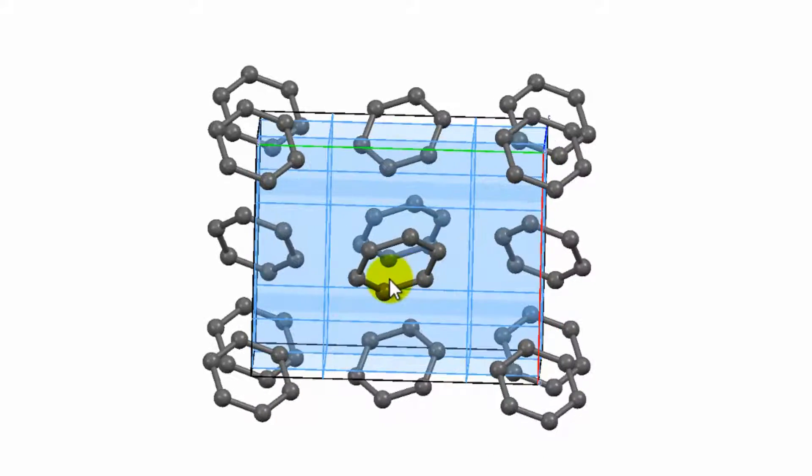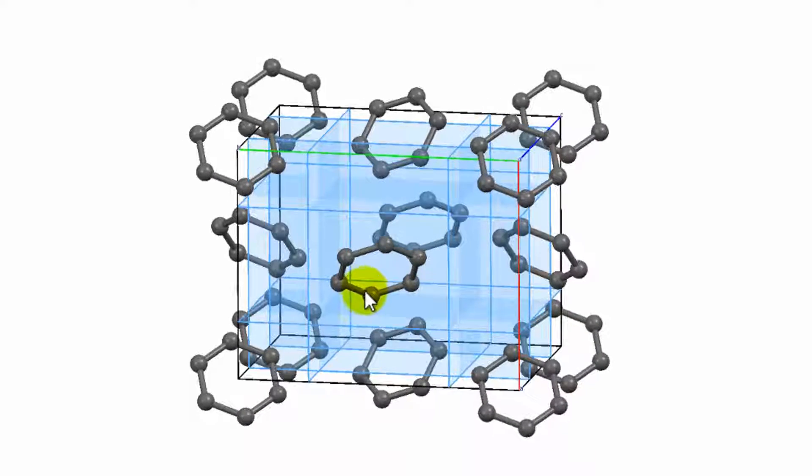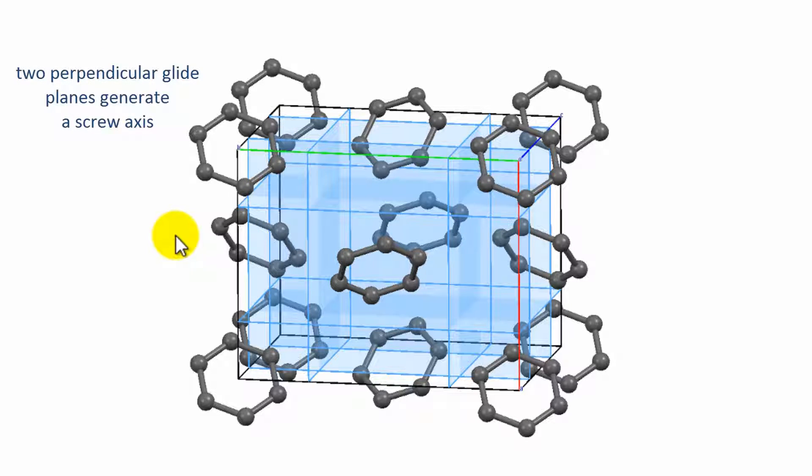So guess, what kind of symmetry element will be probably automatically generated by two perpendicular glide planes? Yes, the respective rotation axis with an additional translational component. And this is a screw axis.